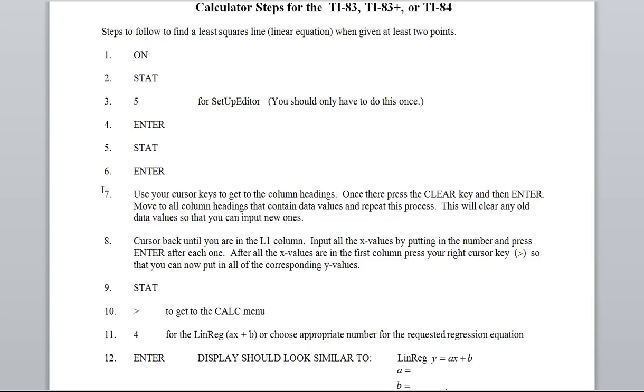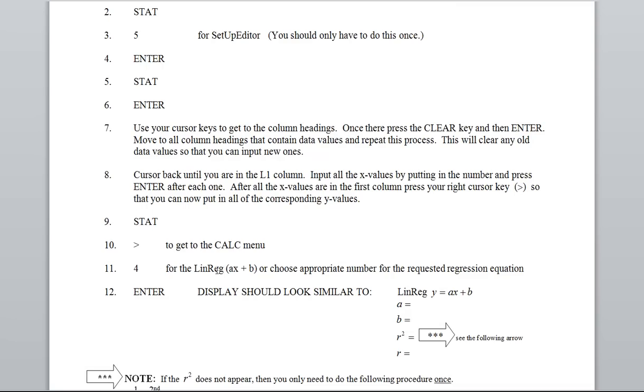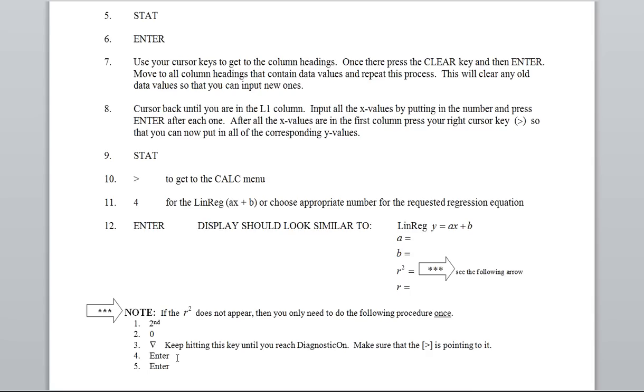Then we go to STAT. Now step 7 and 8 will do this regardless of what type of equation we're going to find. But now step 9 will do, hit STAT, step 10 where we get to the calc menu. Now what can change is step 11 depending on what type of equation regression equation you're asked to find. So you need to read. Once, because right now since we're doing linear equations we'll be doing linear regression. You hit enter and your display should look similar to this right here. We'll go do a problem here in just a second. Now if you do not have the r-squared and the r these are the steps that you have to complete to get those.